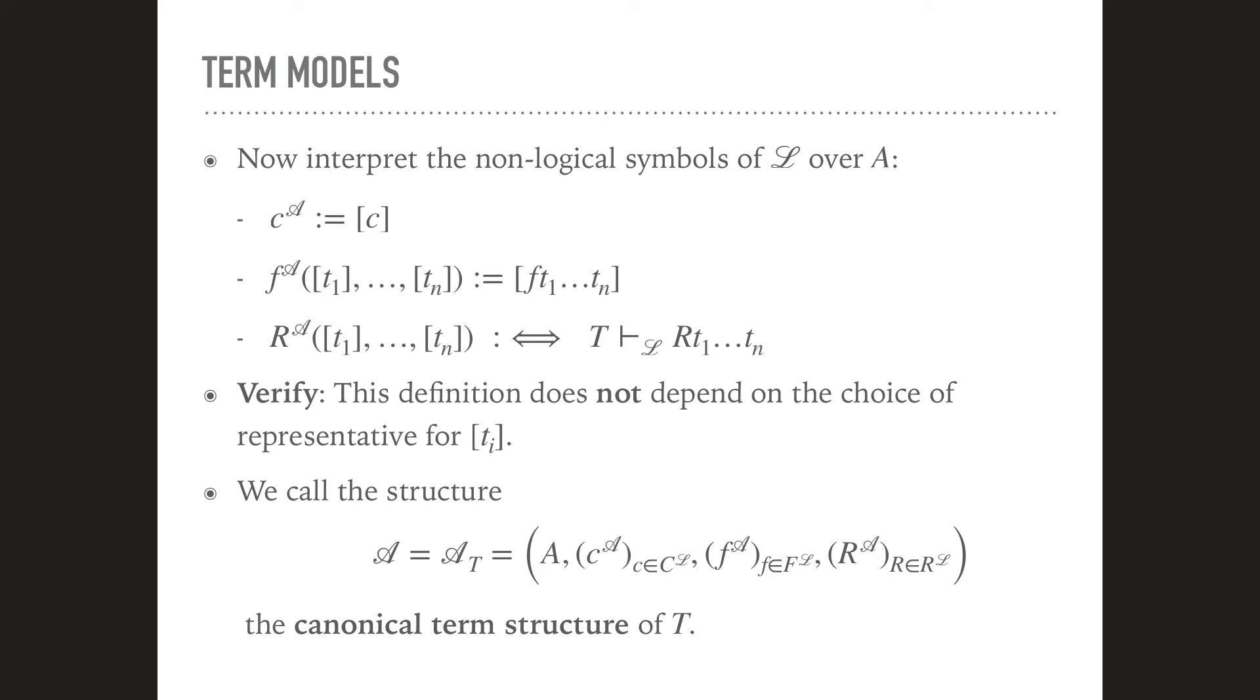So now we have the universe of our structure, but in order to make it a full structure of our language, we also need to interpret the non-logical symbols of our language over this structure. And the way we set this up, it pretty much suggests itself how we should proceed here. So first of all, of course, every constant symbol interpretation should just be the equivalence class of that constant symbol. Similarly, we need to define what the application of a function symbol to elements of our structure is. The elements of our structure, keep in mind, are equivalence classes of terms. So what should the application of a function symbol f be? Well, that's just the equivalence class of the term f t1 tn.